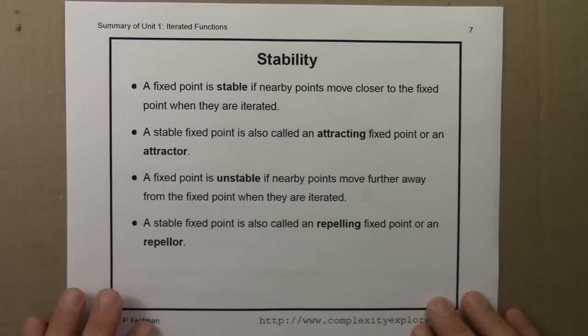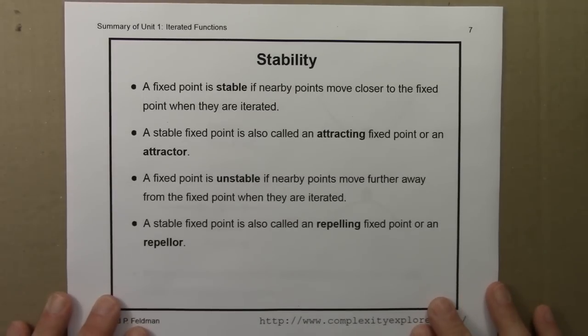There are different types of fixed points, stable and unstable. A fixed point is stable if nearby points move closer to the fixed point when they're iterated. A stable fixed point is also called an attracting fixed point or an attractor.